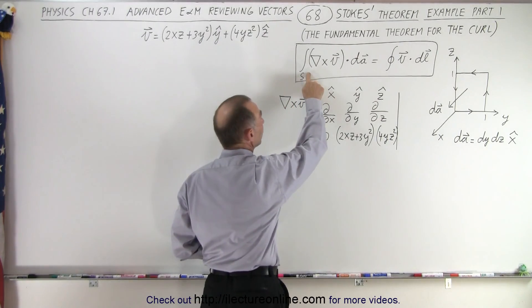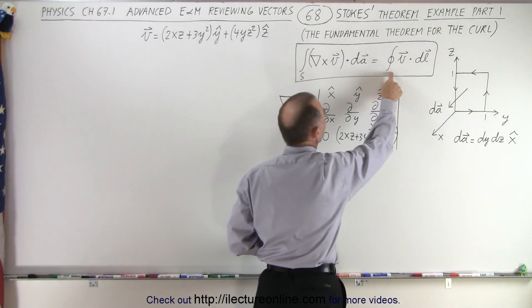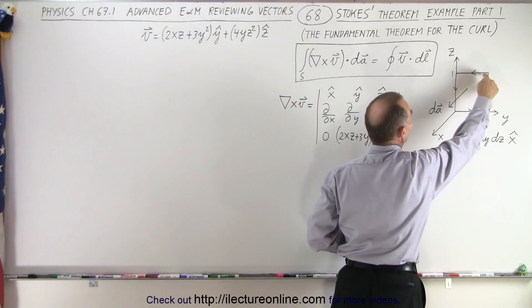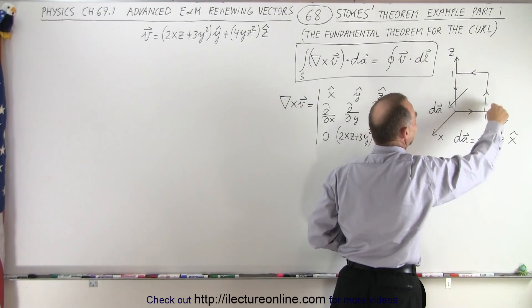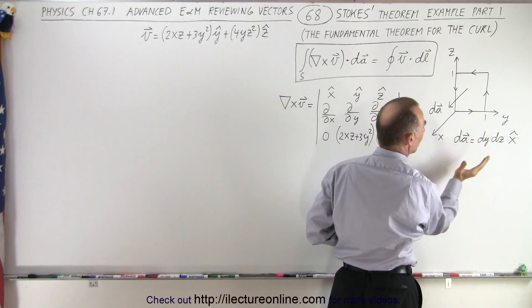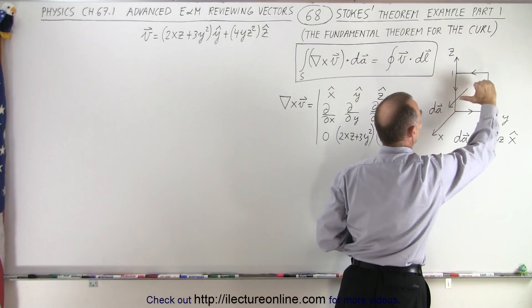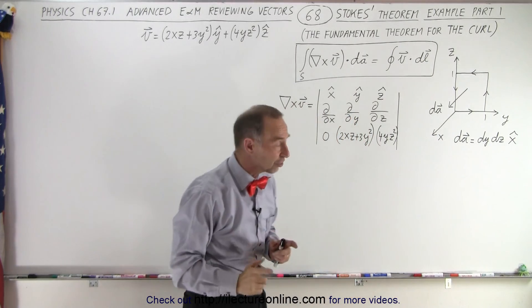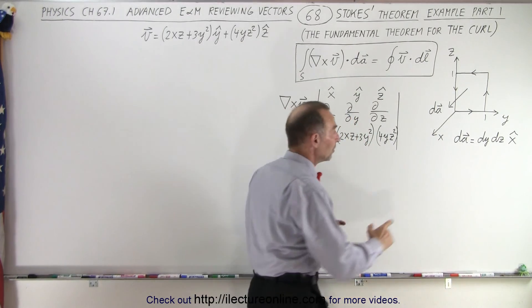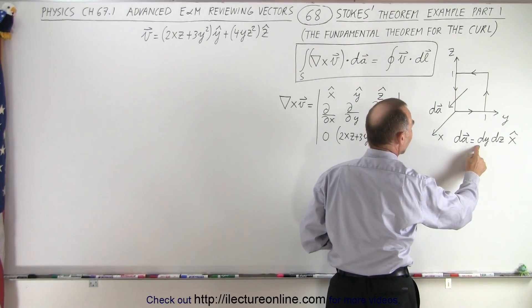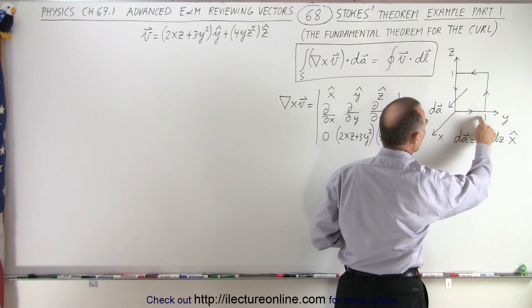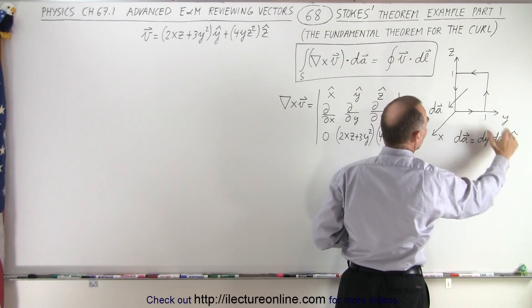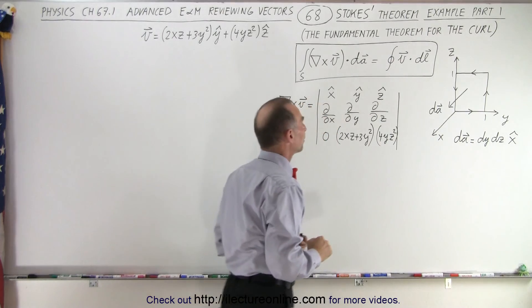On the left side we have a surface integral; on the right side we have a line integral. The line integral is going to go around the surface in a counterclockwise direction. Using the right-hand rule, that means dA will point towards the positive x direction, which means dA will be defined as dy times dz, because y and z change but x doesn't — yet it points in the x direction.